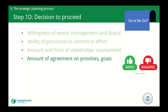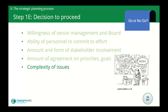Next, get agreement on priorities and goals of the organization. This step requires thoughtful discussion to determine what is truly important in terms of the organization's sustainability, its purpose, and what it seeks to accomplish. Getting agreement on priorities and goals is influenced by how complex the issues are. If the issues facing the organization are fairly straightforward — such as adjusting to some minor regulatory changes — then agreement may come very quickly.